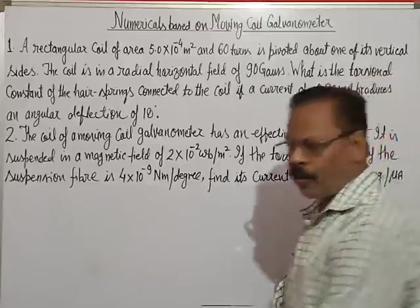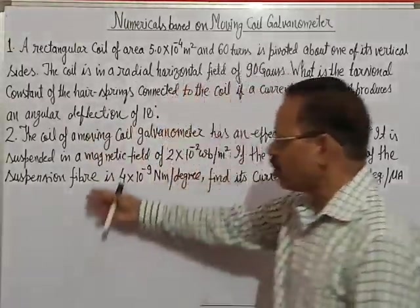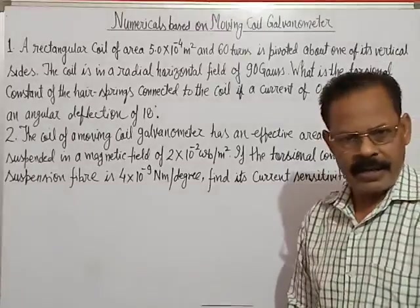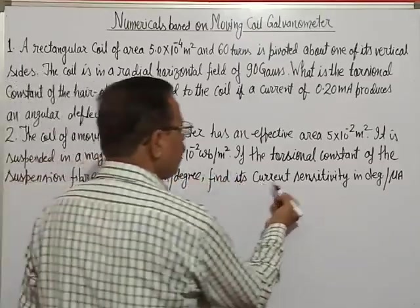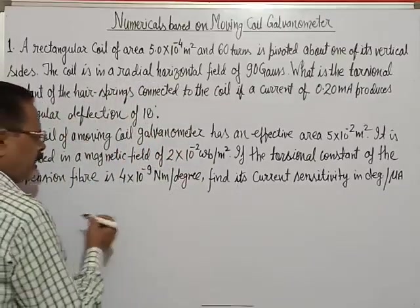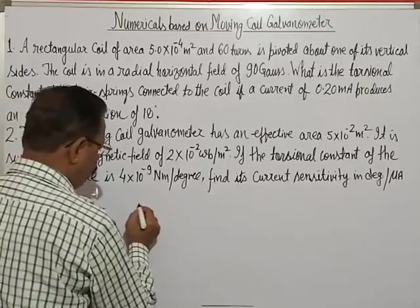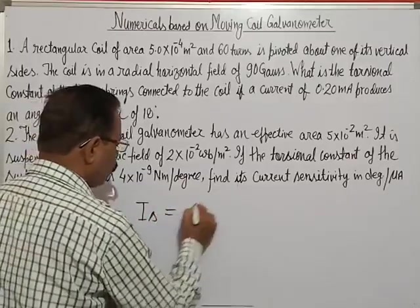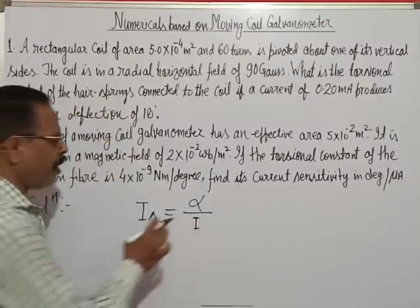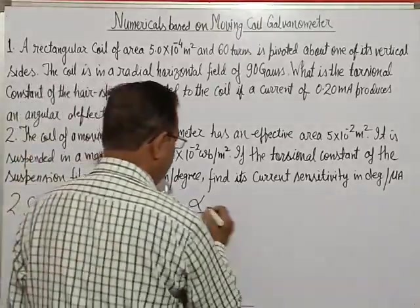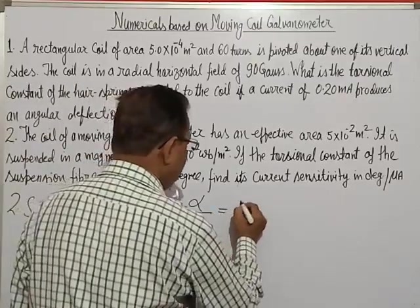हम question number two को नीचे से solve करते हैं क्योंकि मेरे पास इसमें बहुत है। हमें current sensitivity निकालनी है। Current sensitivity का formula जानते हैं — previous session में हमने पढ़ाया था। Current sensitivity को हम IS से represent करते हैं। IS बराबर alpha upon I — यहाँ से देखेंगे alpha upon I, और alpha का formula क्या होता है।